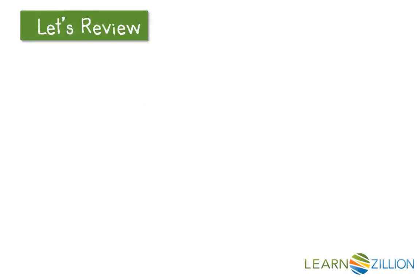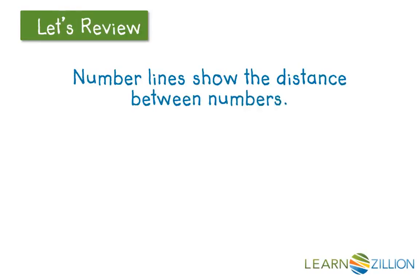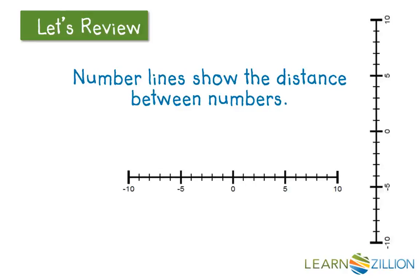Let's review. You already know that number lines show the distance between numbers. You also probably know that there are two kinds of number lines, horizontal and vertical. On both number lines, I can show how far away 5 is from 0 by counting the spaces between 0 and 5. So on my horizontal number line, there are 1, 2, 3, 4, 5 spaces between 0 and 5. And on my vertical number line, there are 5 spaces as well.